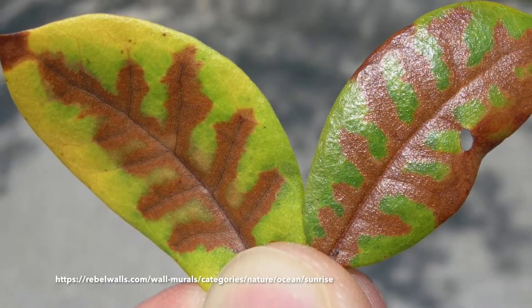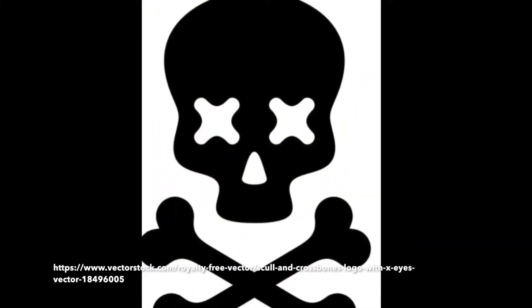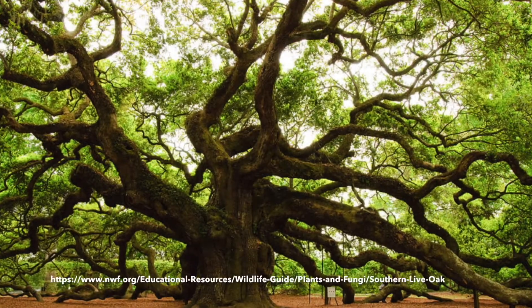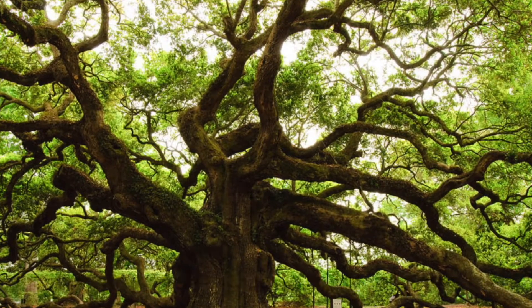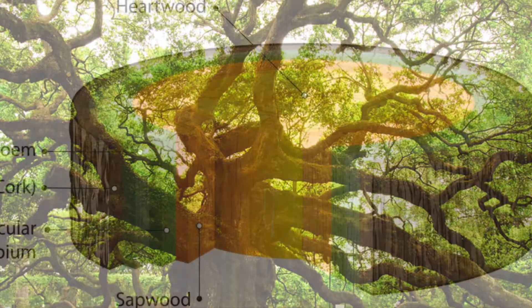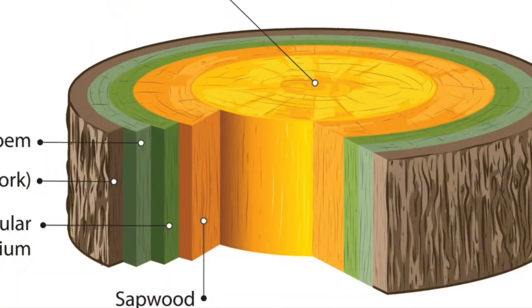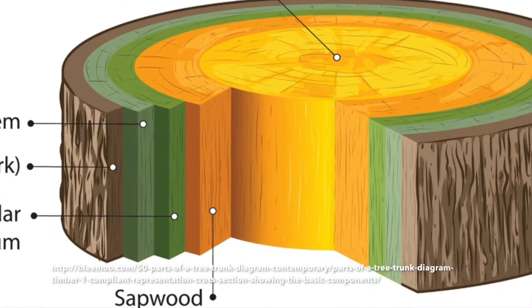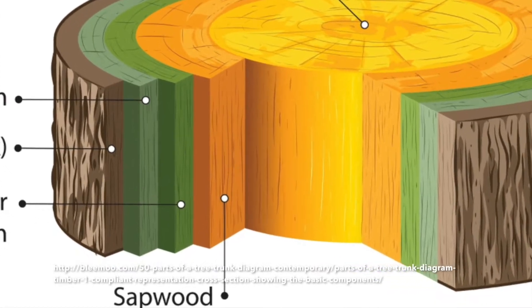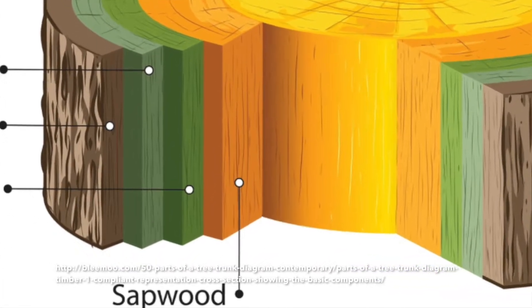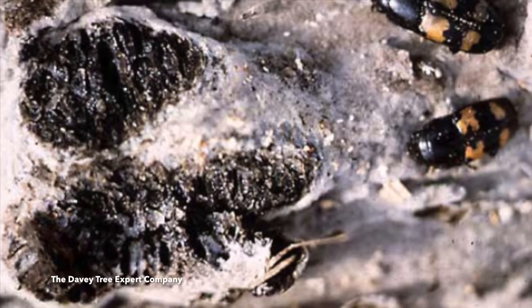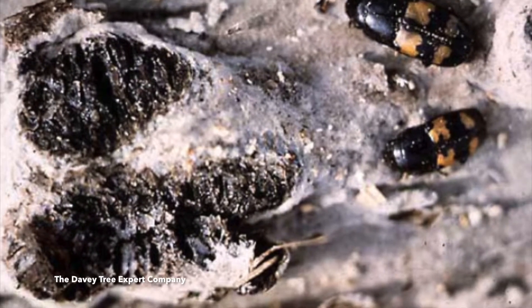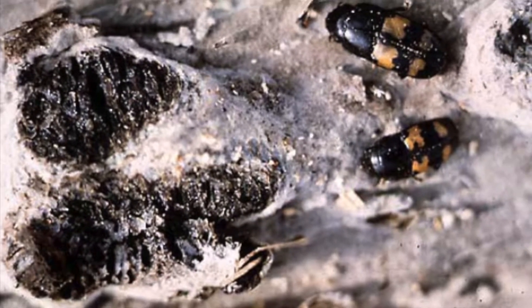Oak Wilt is a serious and often deadly vascular disease of oak trees. The disease grows and spreads through the tree and the sapwood, plugging the water-conducting vessels with the pathogen's body, or the mycelium.